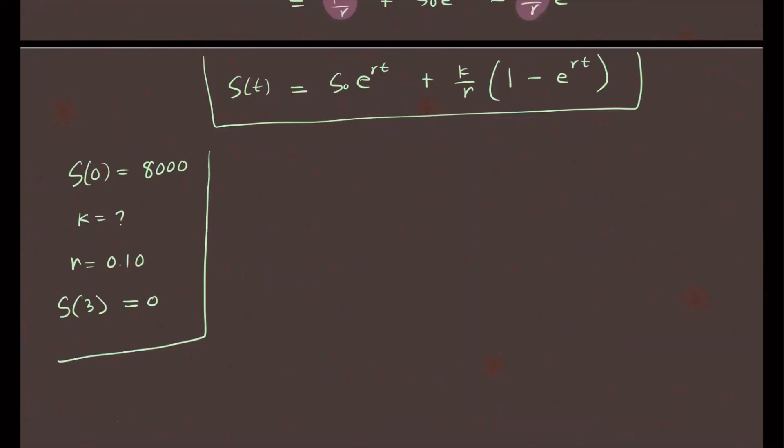So let's figure out what K is. Plug everything in, we already have the model. The amount after three years, we want that to be zero. So I'm setting this to zero because we want the balance to be zero after three years. So we have zero equals S naught, that's 8,000 e to the R, that's 0.1 times 3, plus K, we don't know, we're looking for it, over R, which is 0.1, times 1 minus e to the power of 0.1 times 3.